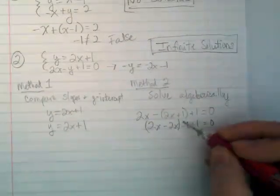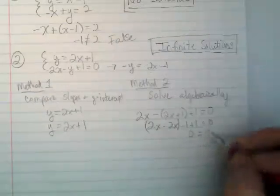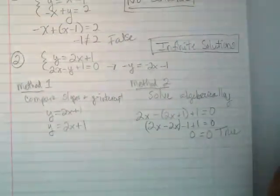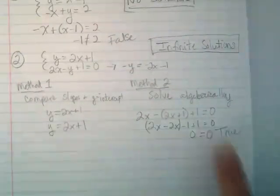Infinite. These are going to cancel out, and so are these. So 0 equals 0. Is that true? Yes. We don't have an x-y pair. We're just finding that if I solve this algebraically, I get a true statement.